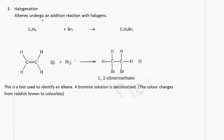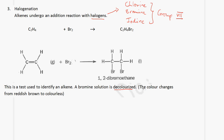The next type of reaction is halogenation. Alkenes undergo addition reactions with halogens — chlorine, bromine, iodine — essentially Group 7 elements. In this example, ethene reacts with bromine to give us 1,2-dibromoethane. This is a test used to identify an alkene: a bromine solution is decolorized, meaning the color changes from reddish-brown to colorless. This type of reaction is an addition reaction.